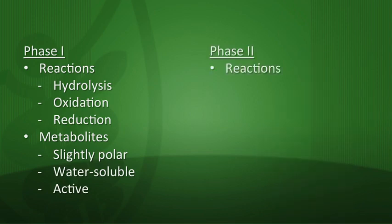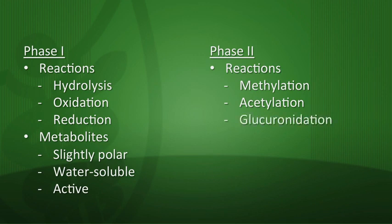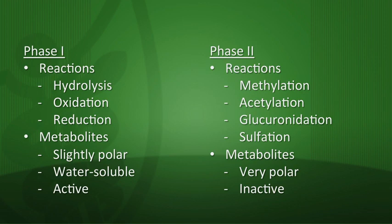Phase two reactions include methylation, acetylation, glucuronidation, and sulfation — all conjugation reactions, meaning you're joining the drug to another molecule like a methyl group, acetyl group, glucuronic acid, sulfate, or glutathione. Phase two reactions result in very polar, inactive metabolites that are easy to excrete in the urine. Those highly polar, hydrophilic molecules cannot cross cell membranes readily, so they get trapped in the urine. Both phases occur primarily in the liver.